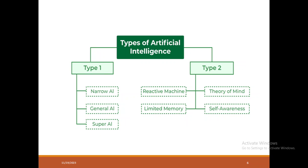Coming to the types of AI, we have two types. In the first type, we have narrow AI, general AI, and super AI. In the second type, we have reactive machine, theory of mind, limited memory, and self-awareness.